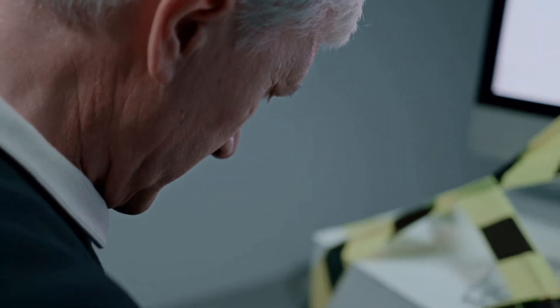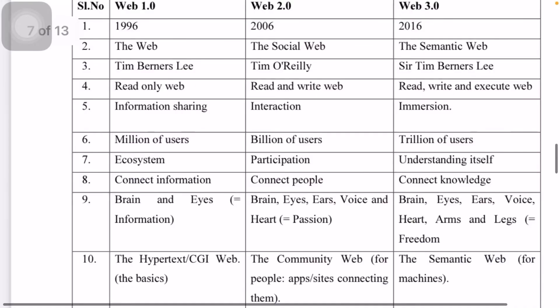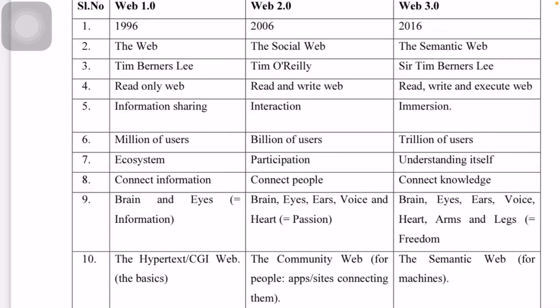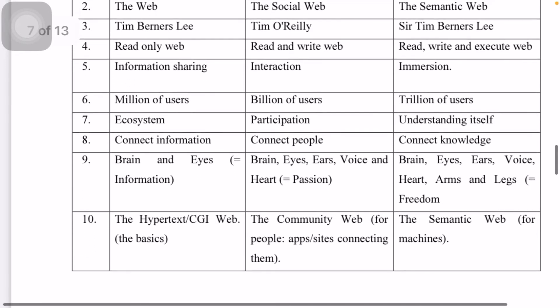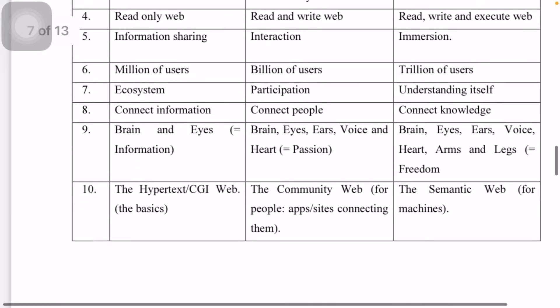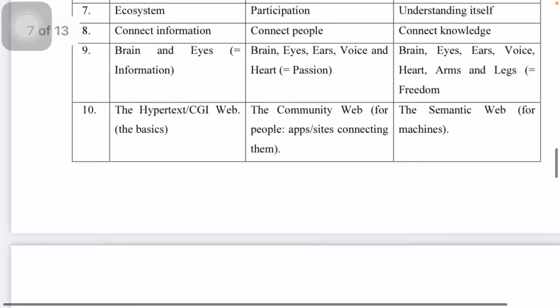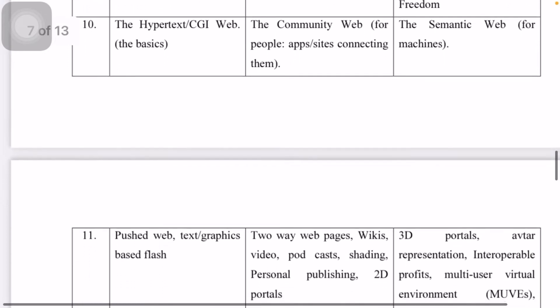Moreover, everything is going to be anonymous — everybody's profile is going to be kept private because you are the only one who has your data, and nobody else knows you. In Web 3.0, they want everything to be a read, write, and execute web, where people can understand it themselves, connect knowledge, and share knowledge.